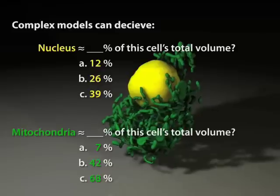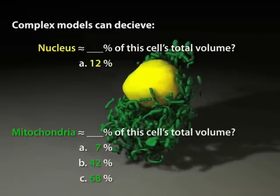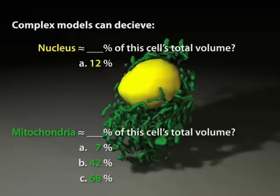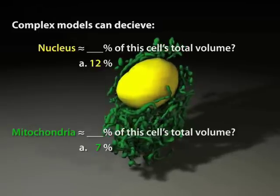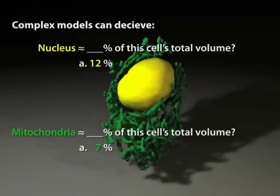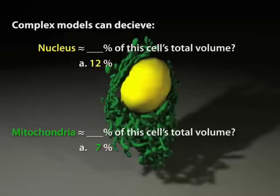the correct answers are closest to 12% for the nucleus and only 7% for the mitochondria, much lower than most people infer by glancing directly at these representations of the data.